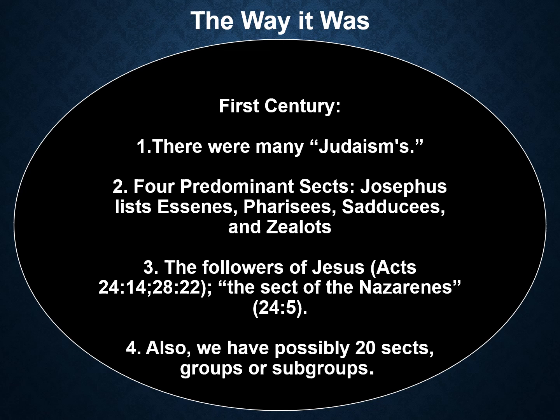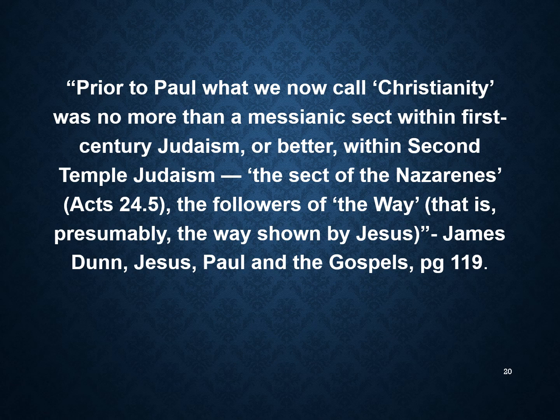The reality is that in the first century there were many Judaisms, not just one strand. As Josephus describes, you had different sects: the Essenes, Pharisees, Sadducees, and Zealots. Some of these sects are mentioned in the New Testament. The followers of Jesus are referred to as the sect of the Nazarenes in Acts. We've possibly discovered up to 20 sects, groups, or subgroups. James Dunn, a New Testament scholar, says: 'Prior to Paul, what we now call Christianity was no more than a Messianic sect within first-century Judaism, or better, within Second Temple Judaism.' They were called the sect of the Nazarenes, the followers of the Way.